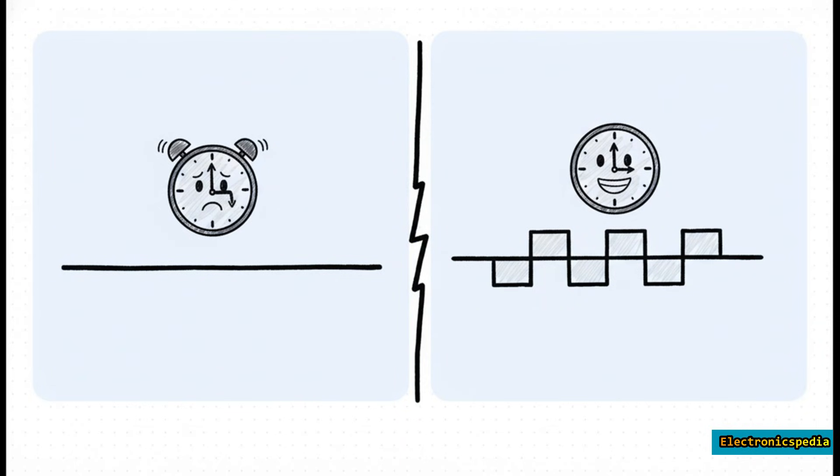This visual just nails it. That flat line on the left — that long string of zeros — is a total nightmare for the receiver's clock. There are no reference points to stay synced up. But look at the stream on the right: it's constantly flipping between one and zero. Those transitions create a steady rhythm, basically embedding a clock signal right inside the data itself.